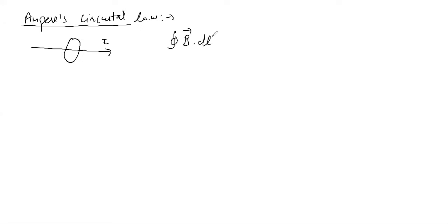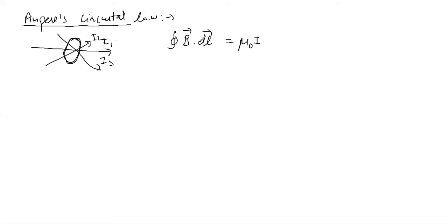This dl represents integration over this path, equal to mu times i. Here I have shown one wire. If you had multiple wires — say this one has i1, this has i2, and one more wire i3 — then it would be the summation of all the currents: i1 plus i2 plus i3. For simplicity, let's assume there is just one wire carrying current.